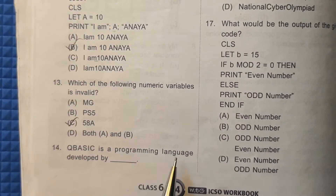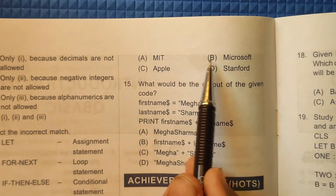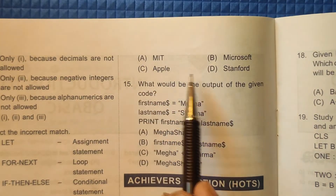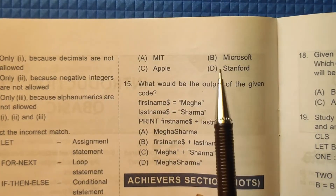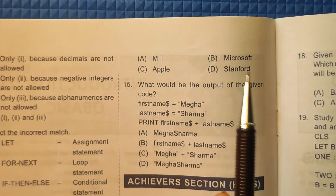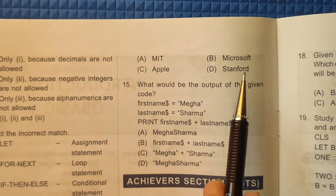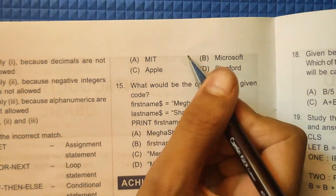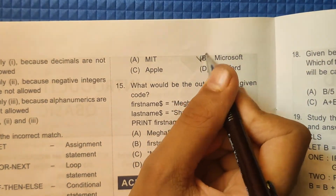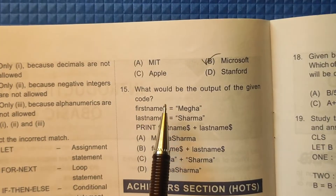Question 14: QBasic is a programming language developed by — A: MIT, B: Microsoft, C: Apple, or D: Stanford. QBasic is developed by Microsoft. So our correct answer is option B.